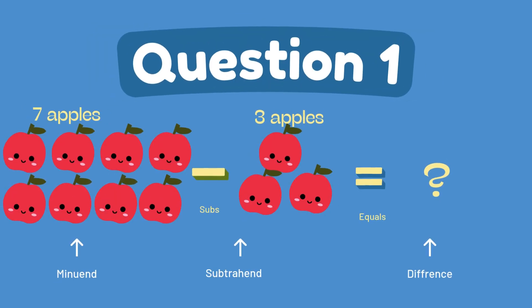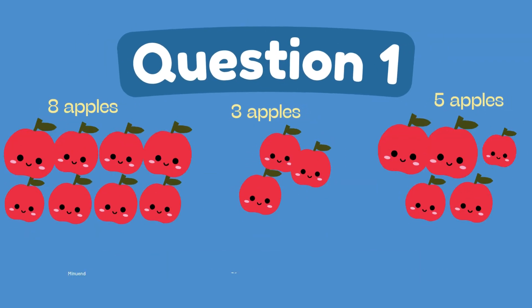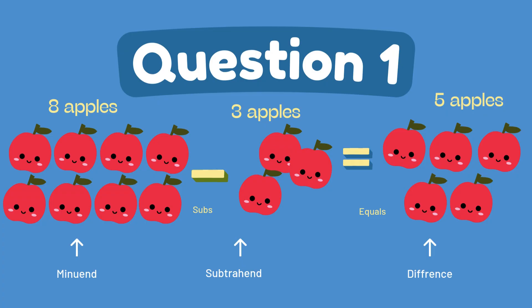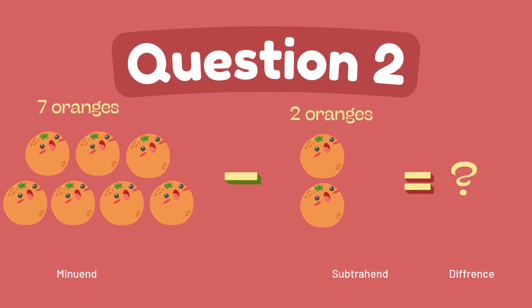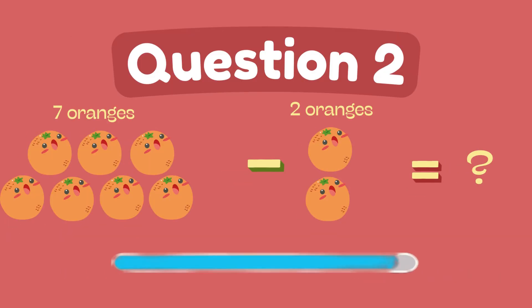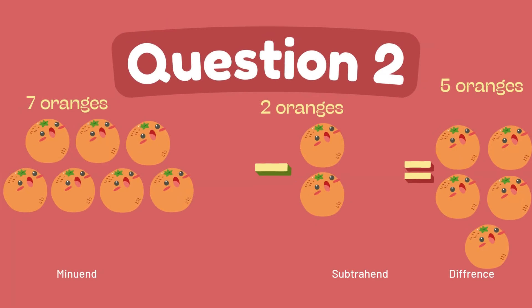What is 8 minus 3? The answer is 5. What is 7 minus 2? The answer is 5.